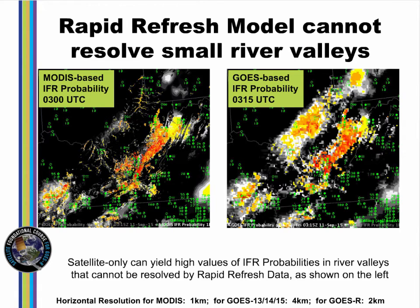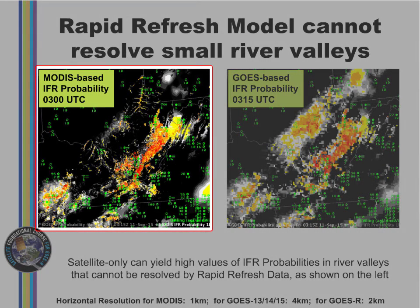When river valley dimensions are smaller than the model resolution, as is often the case with small rivers in, for example, Appalachia or the Ozarks, satellite-only information is sufficient to light up a river valley with IFR probabilities, as shown in the MODIS IFR probability image on the left.